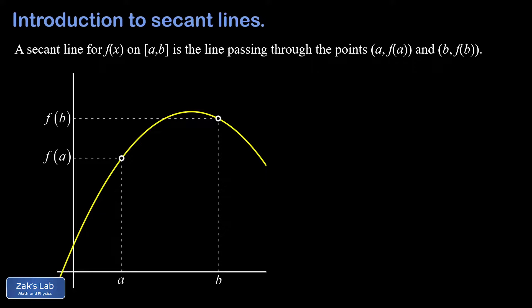We have some arbitrary function f of x in our diagram, with two x values: a on the left connected to a y value of f of a, and b on the right connected to a y value of f of b. The secant line for f of x on this interval is just the line passing through those two points on the function — the points (a, f(a)) and (b, f(b)). We'd like to get a formula for the slope of the secant line.